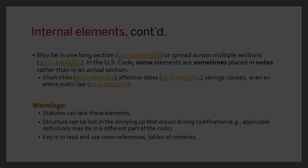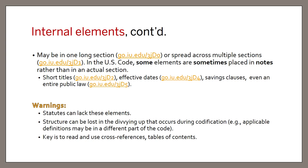These internal elements are often spread across multiple sections of the code, but like everything in law, there are exceptions — sometimes everything will be in one section. In the U.S. Code, and perhaps in some state codes, statutory elements may even be in the notes to a section rather than in the actual text itself. This is a reminder that when you're doing statutory research, you should read carefully, read further than you think you need to, and reflect on whether something is missing from what you've found.